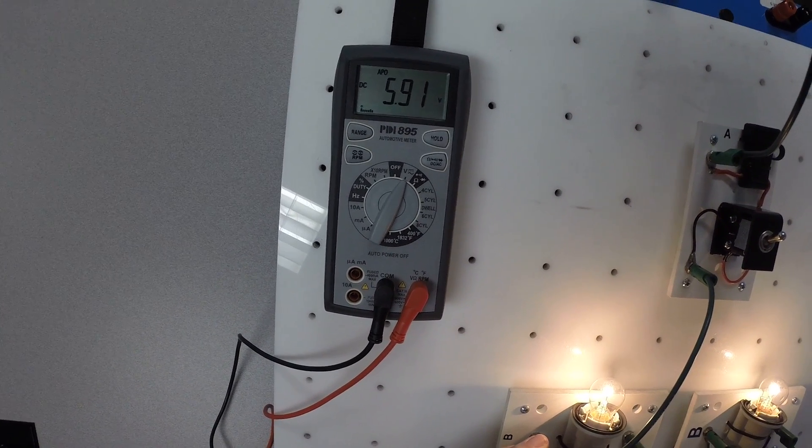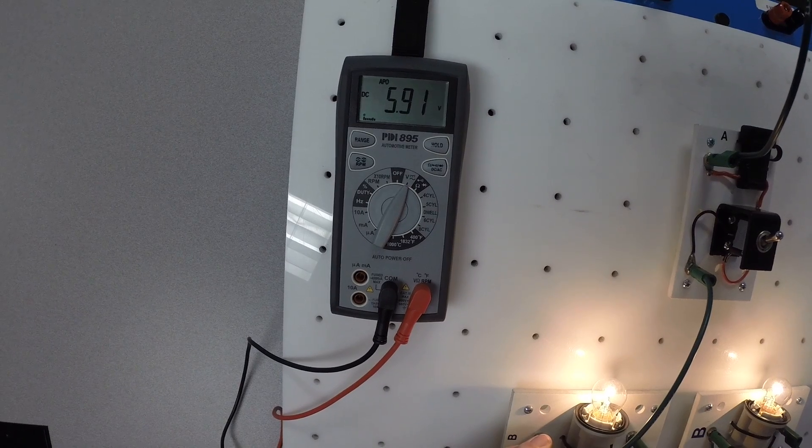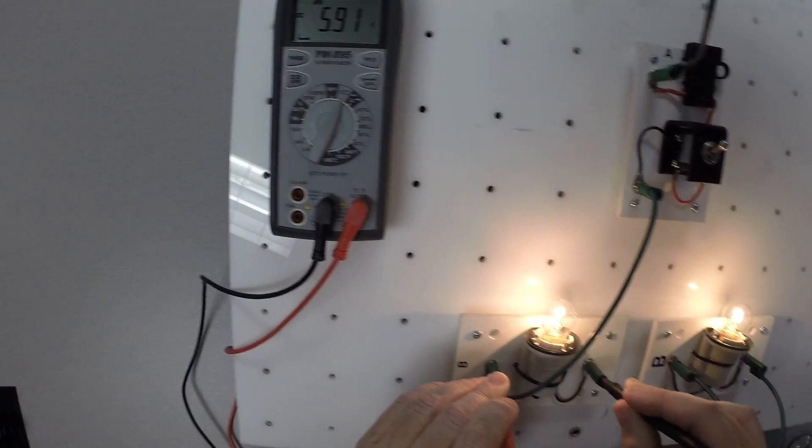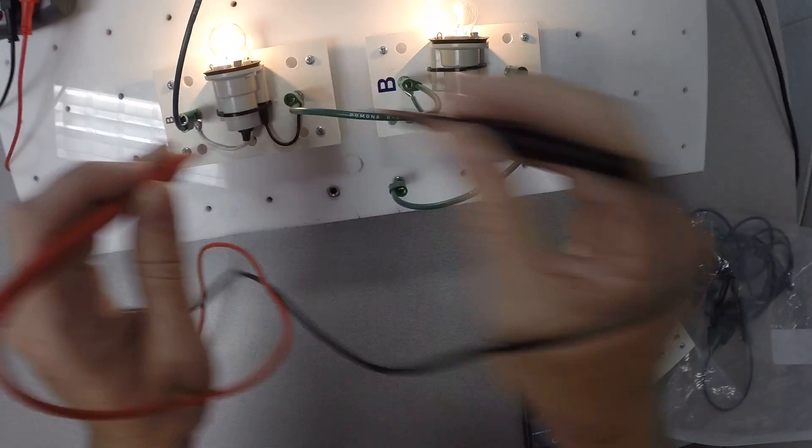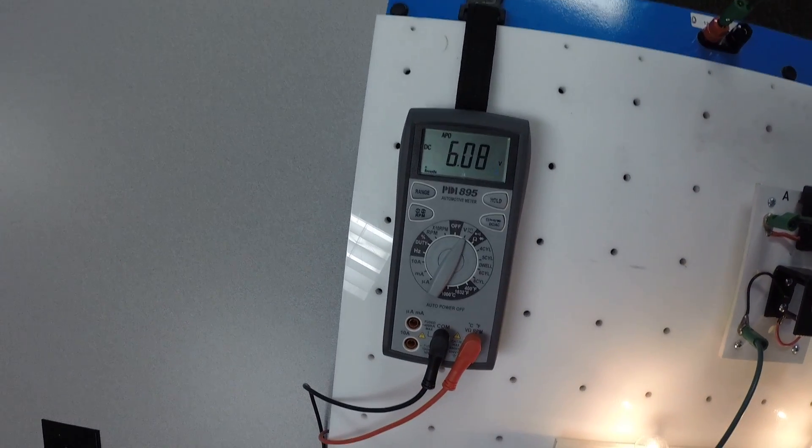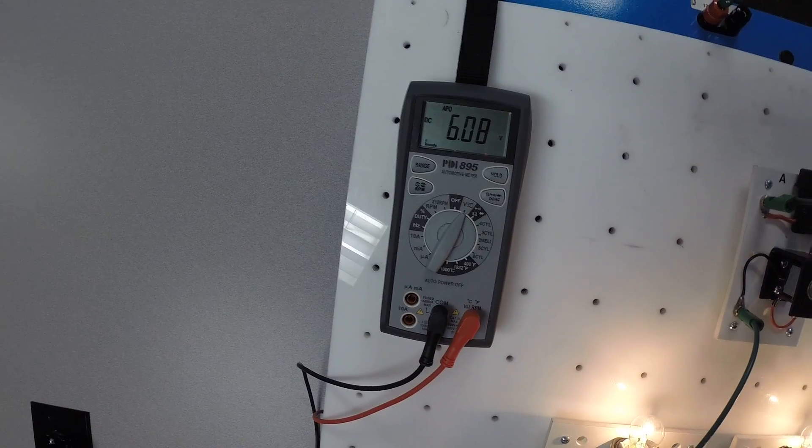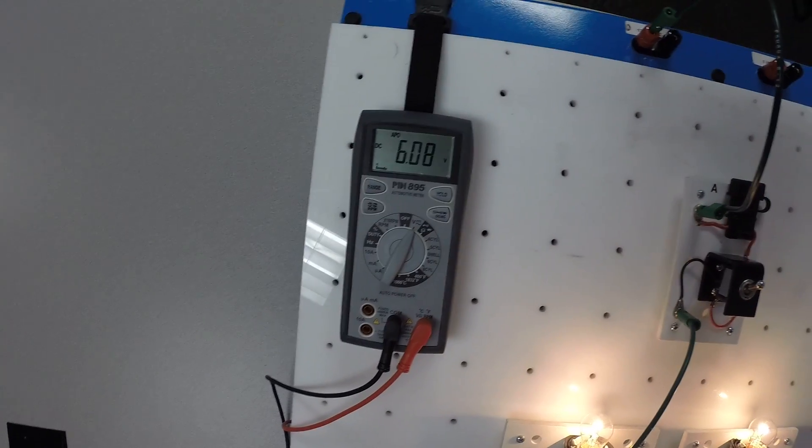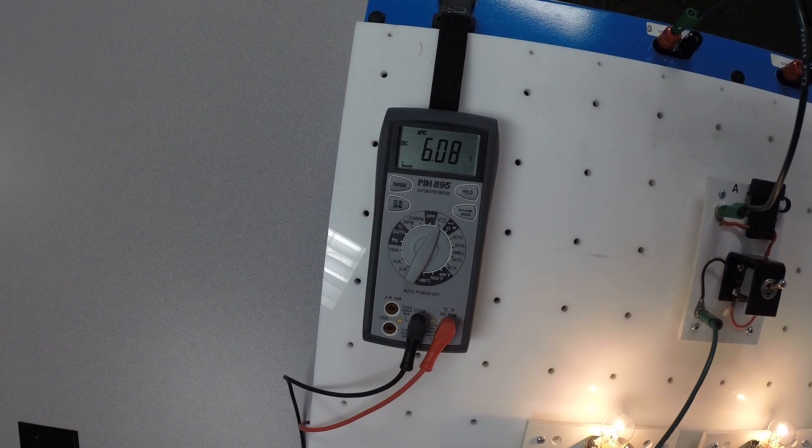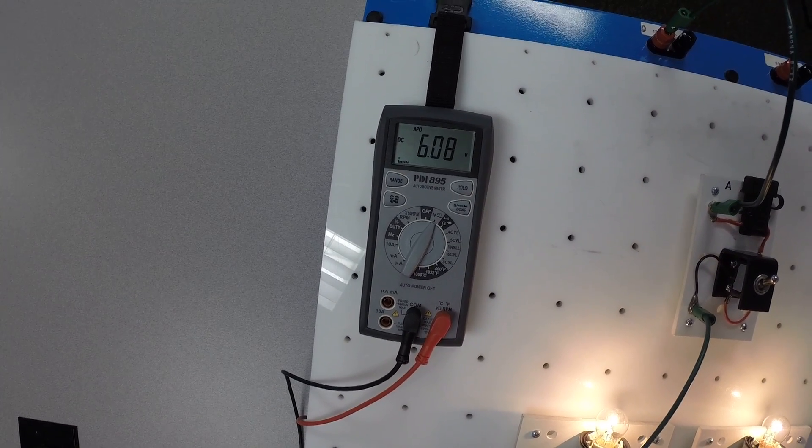So 5.9 volts is being dropped. That's probably, or that should be half of the total voltage. Let's look at our second one, our second bulb and see how it compares. So 6.0. 6.0 and 5.9, not very different. That is not significantly different. So we can essentially say those numbers are the same.